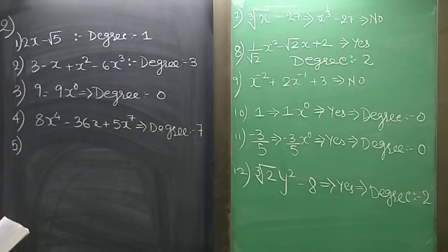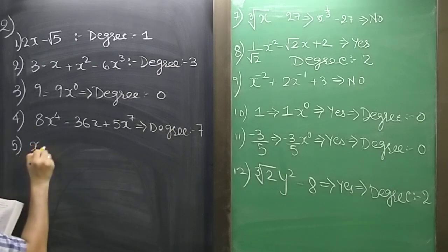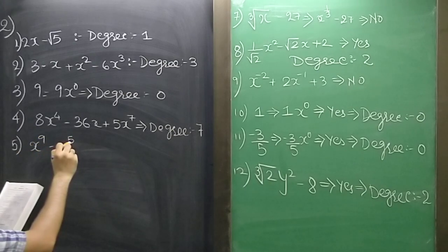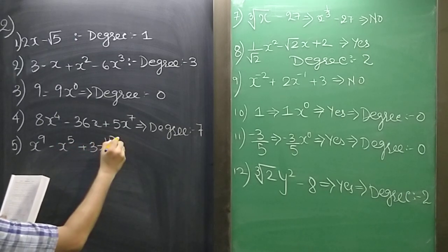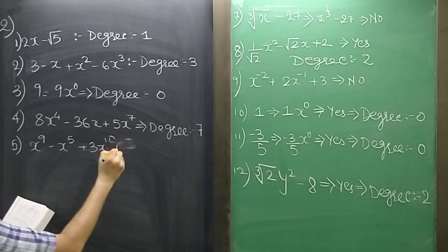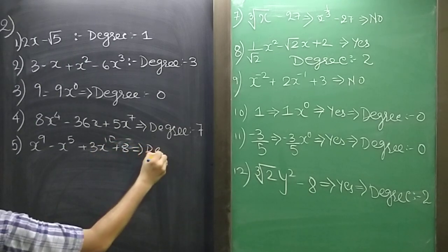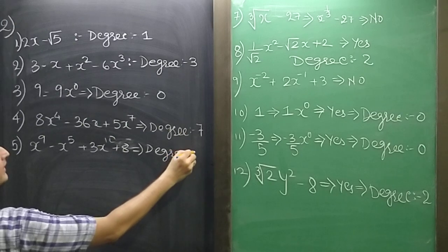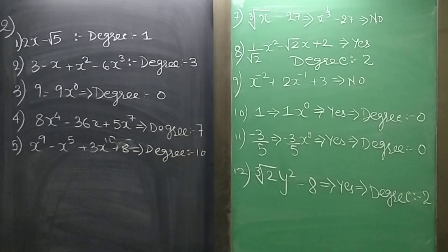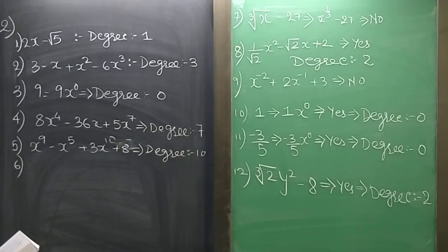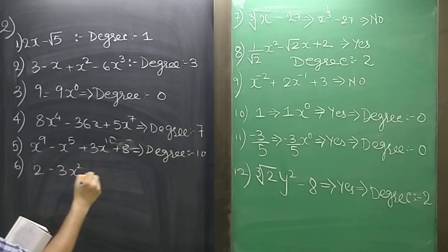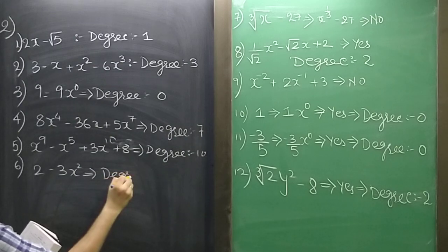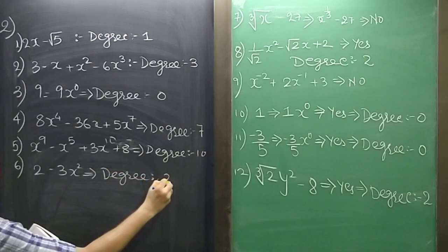Sum 5: x raise to 9 minus x raise to 5 plus 3x raise to 10 plus 8. The degree is 10 because that is the maximum power. Sum 6: 2 minus 3x squared. The maximum power is 2, so degree is 2.